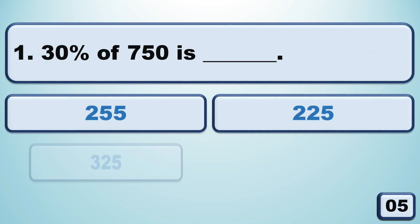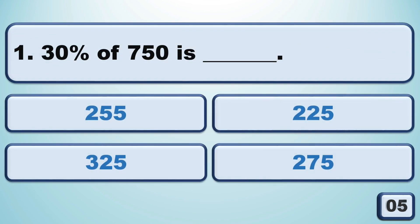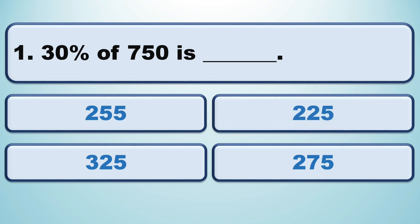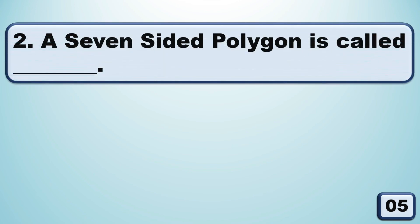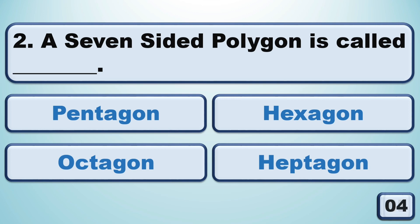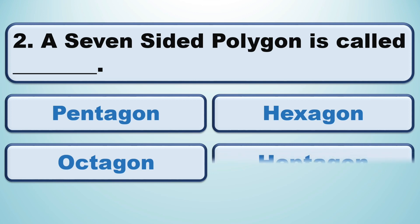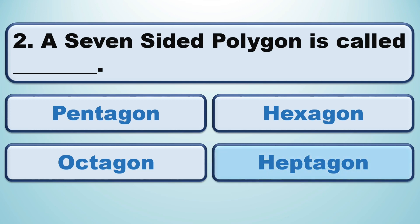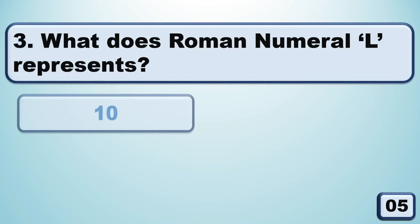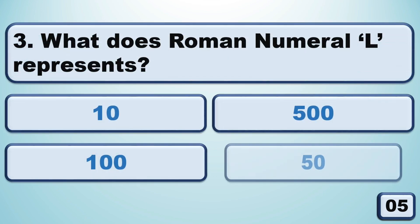30% of 750 is 225. A seven-sided polygon is called a heptagon. What does Roman numeral L represent?